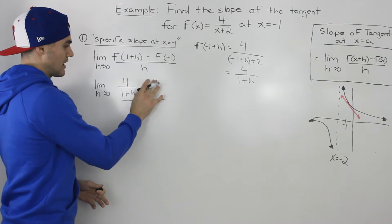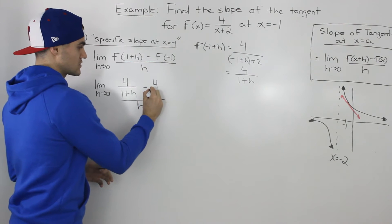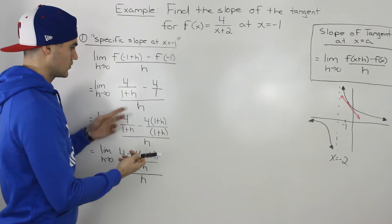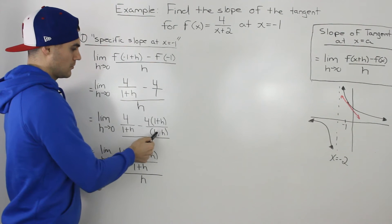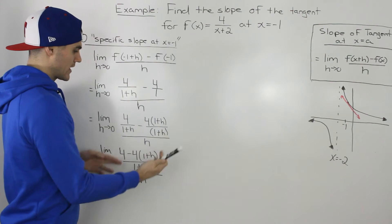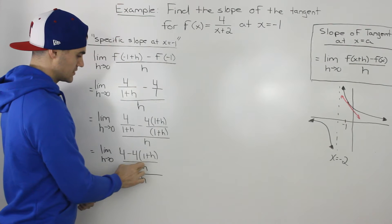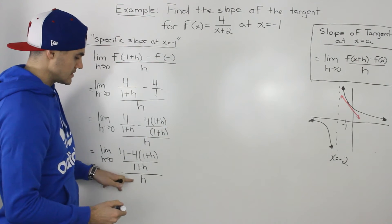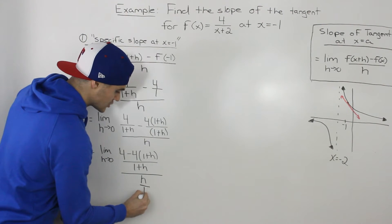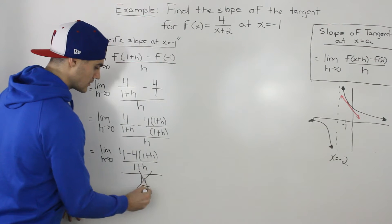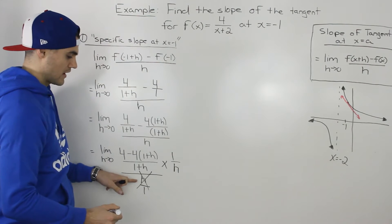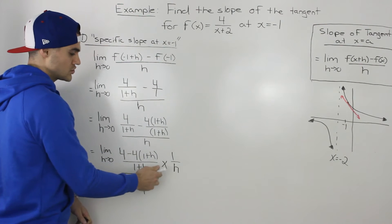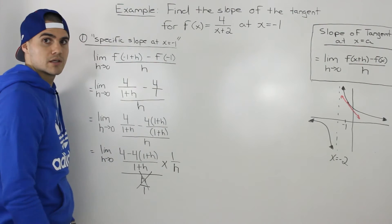We need to simplify the numerator and create one fraction. We put that 4 over 1, then get a common denominator of (1+h), multiplying both numerator and denominator by (1+h). Now we can subtract the fractions into a single one: (1+h) in the denominator, and 4 minus 4(1+h) in the numerator, still over h. Since we're dividing by h, I recommend rewriting it as multiplying by 1/h — dividing by a fraction is the same as multiplying by its reciprocal — which makes the algebra easier to see.